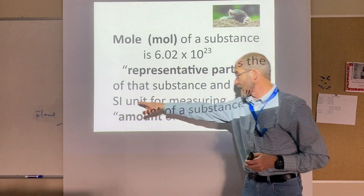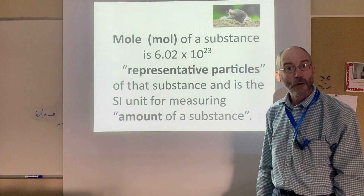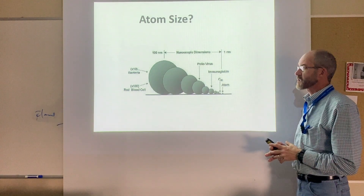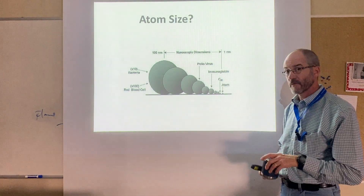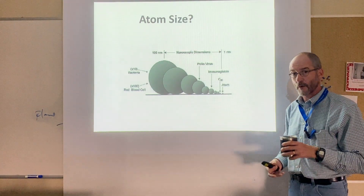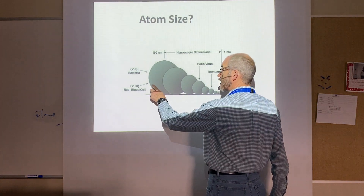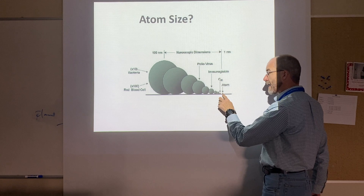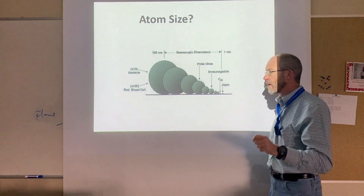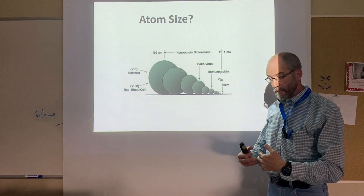The mole is the SI unit for measuring amount of a substance — it helps give me amounts. I'm using a visual aid here: it doesn't have to be perfectly accurate, but it helps you understand concepts. What you see is a red blood cell, a polio virus, and all the way down to an atom. The point isn't that an atom is drawn to actual size — the point is to look at the relative size of an atom compared to a red blood cell.